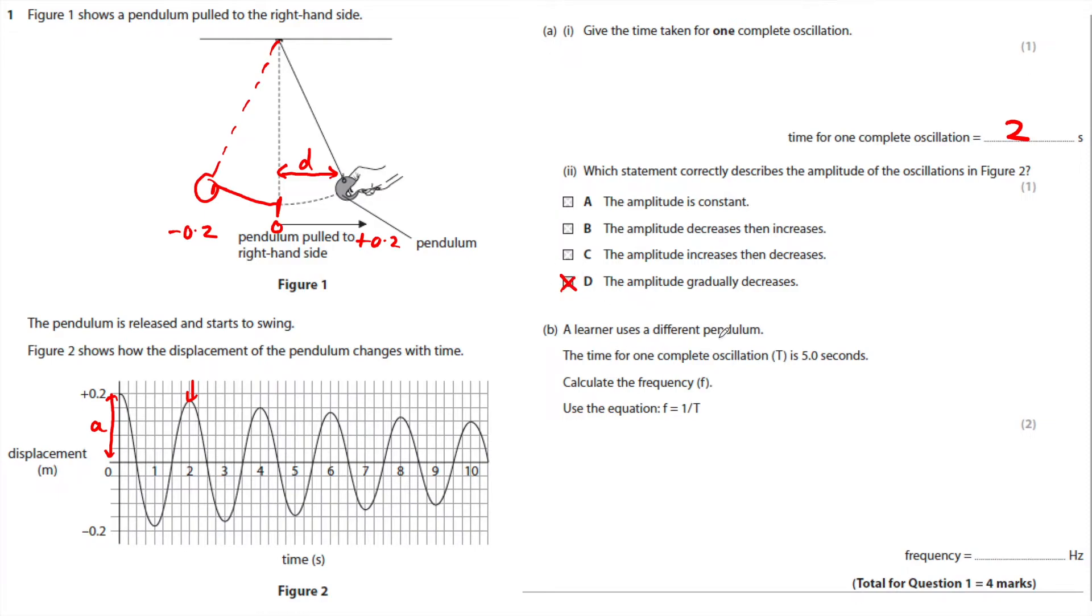The learner uses a different pendulum. The time for one complete oscillation is five seconds. Calculate the frequency. In the later exams, you are now given the equation in the question to say you have to look at the equation sheet at the back. So I would first rewrite the equation. Frequency is one over the time period. You need to calculate frequency so you don't need to arrange it. So just put in your values and work out the answer. One over five is 0.2.